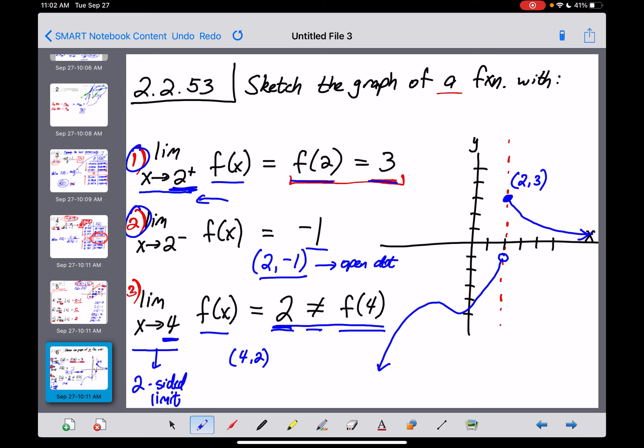But since f of 4, reading this backwards, does not equal 2, that needs to be an open dot right there at that point. And I think by dumb luck, I actually came pretty close to getting that right. So I'm going to amend my graph here just a little bit. I'm going to go to the point (4, 2) and make an open dot right there.